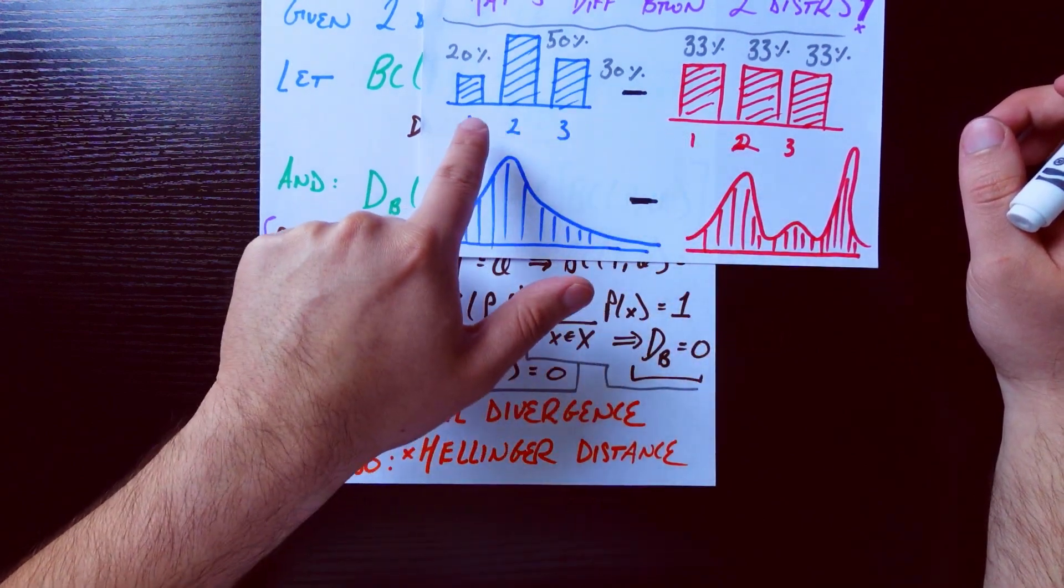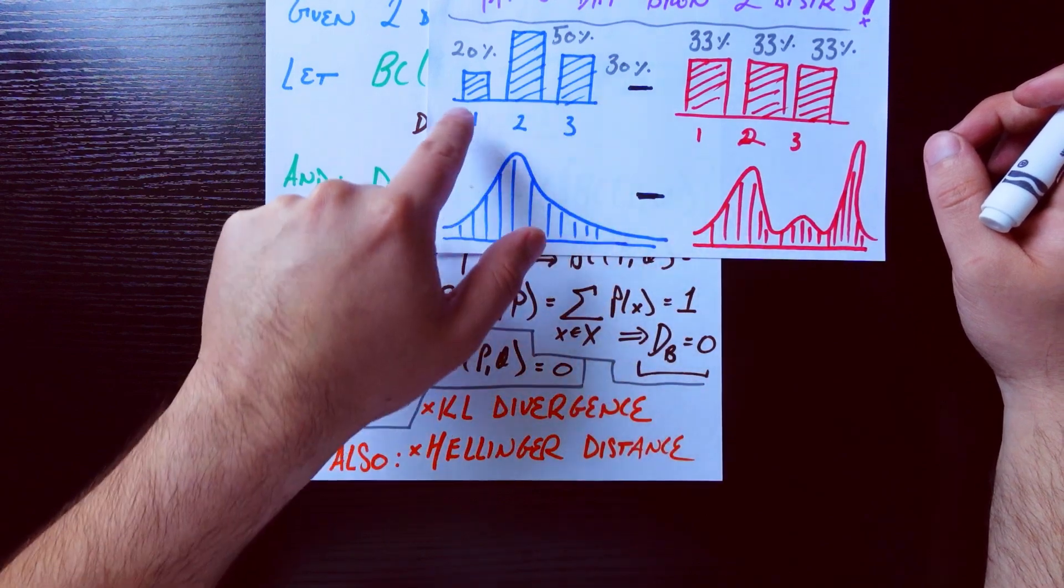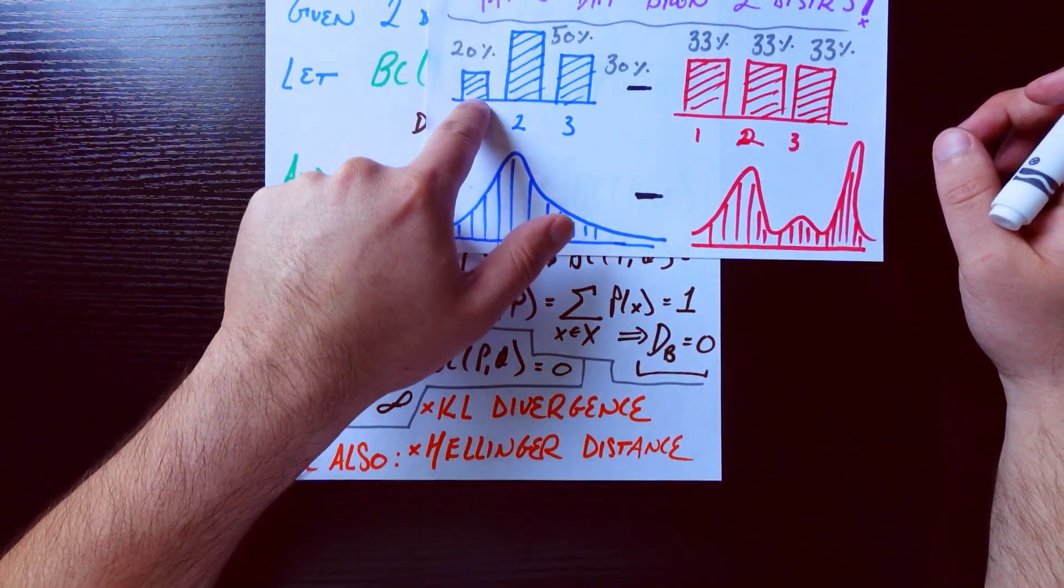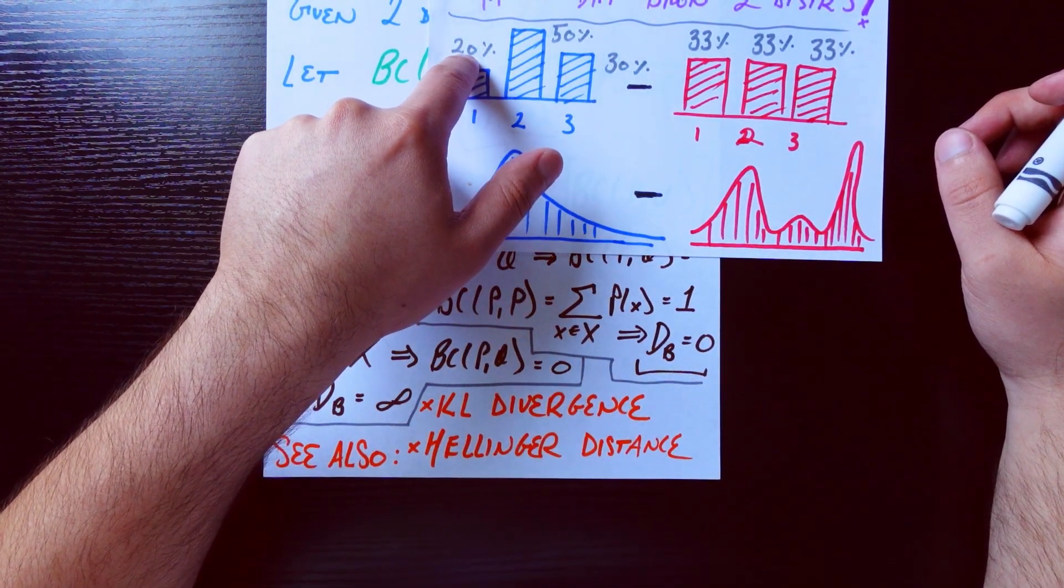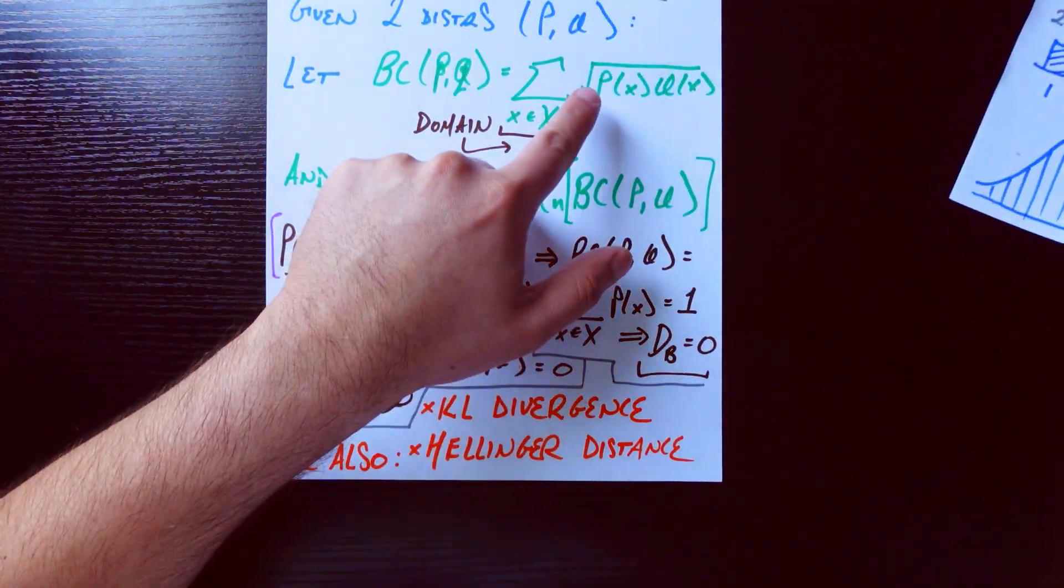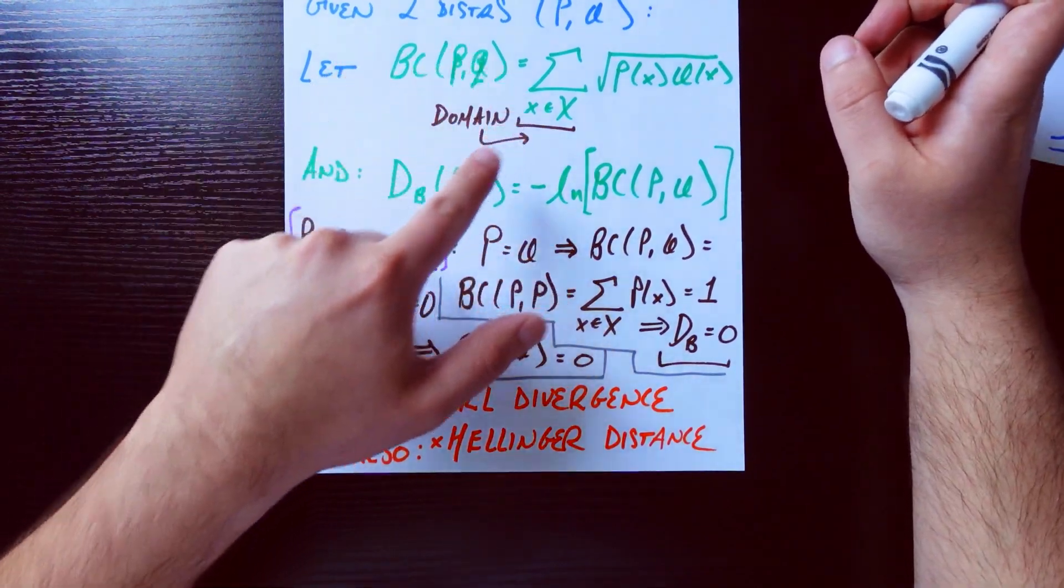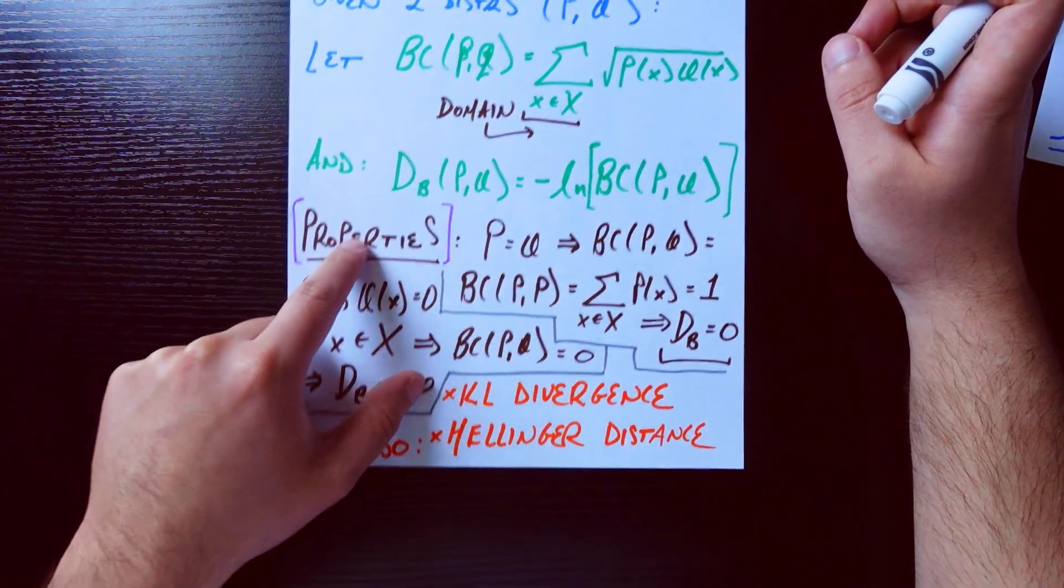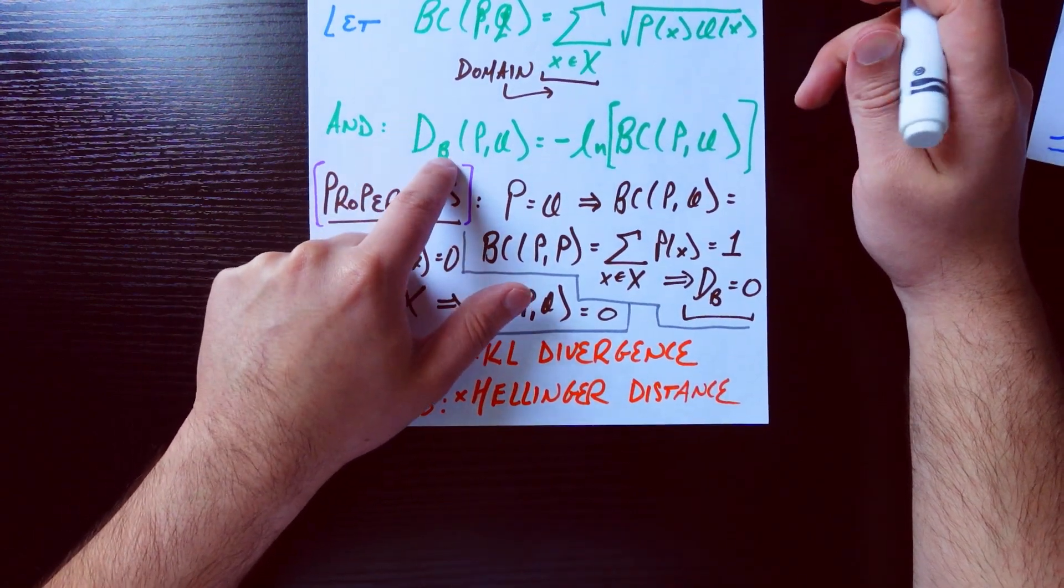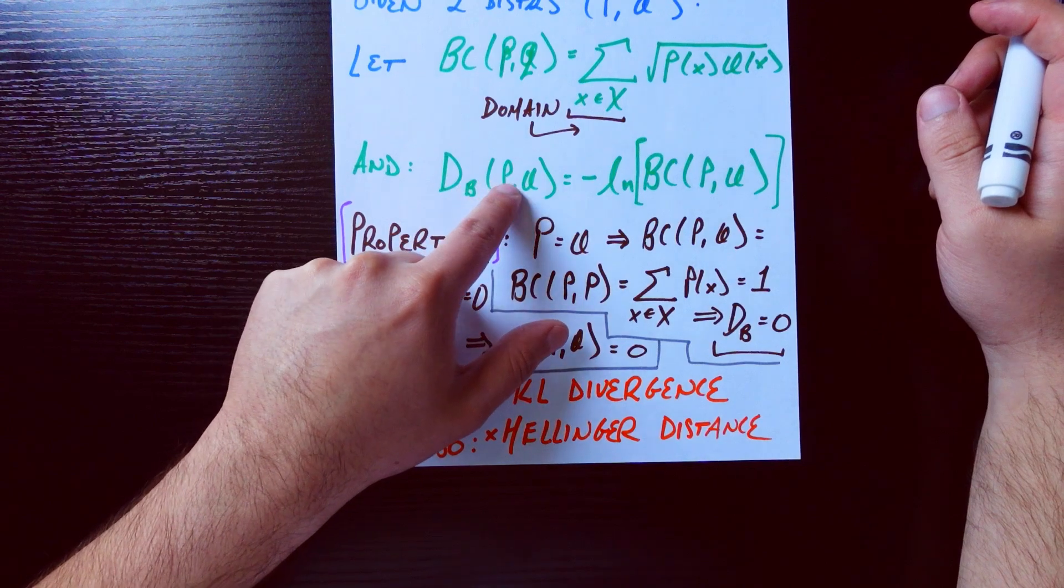So let's unpack this just a little bit. For example, these two discrete distributions have domain on 1, 2, and 3, so we sum over 1, 2, and 3. We ask: what's P(1)? That would be 0.2. Multiply that by Q(1), which is 0.33, and that becomes our first element. Then we just do the other ones. So that's this BC coefficient.